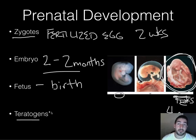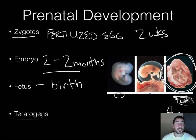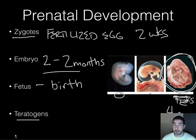Another term we need to be familiar with is teratogens. This is stuff that gets into the blood while the baby is developing — secondhand smoke, regular smoke, anything like that, excess stress hormones — that can affect the baby's development. Teratogens are something you really don't want, as they can harm development. Things like fetal alcohol syndrome are examples, so we want to stay away from those.